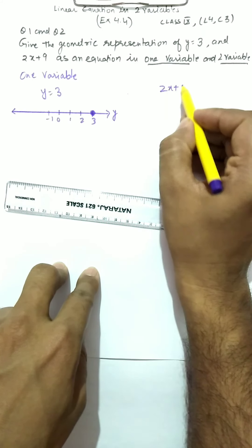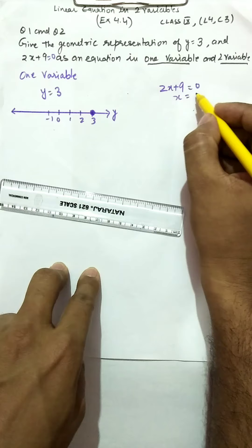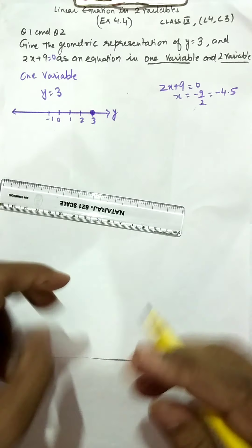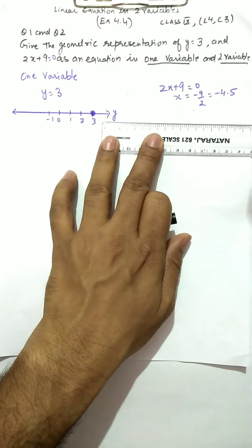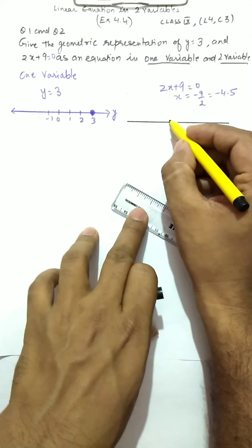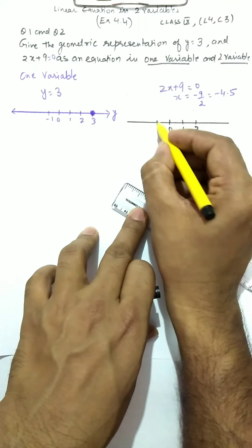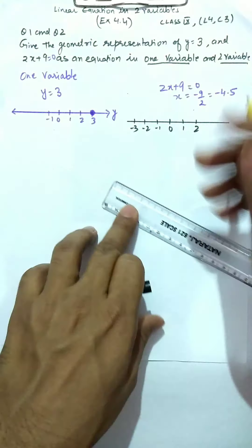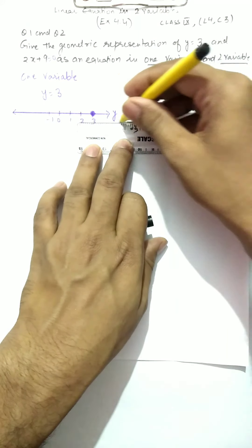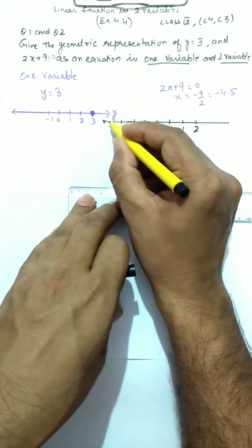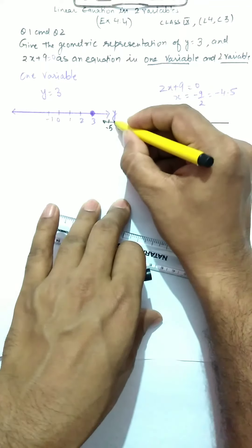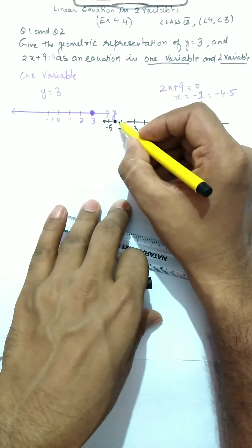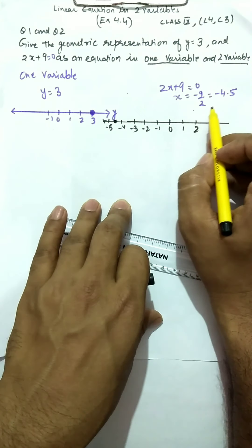The second equation is 2x + 9 = 0. From here you get x = −9/2, which is −4.5. This can also be represented on the real number line. So I draw a number line: 0, 1, 2, then −1, −2, −3, −4, −5. Your value is −4.5, which is somewhere between −4 and −5. The filled point at −4.5 is the graphical representation of 2x + 9 on the number line.